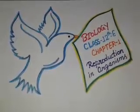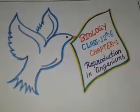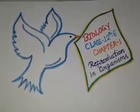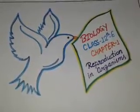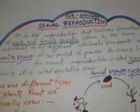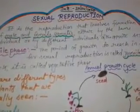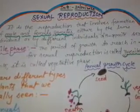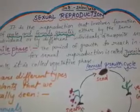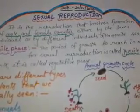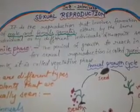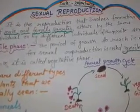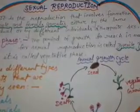Today, I will teach class 12 biology chapter number 1, that is reproduction in organisms, where we will discuss about sexual reproduction. We studied in the previous class about sexual reproduction very briefly, but today I will discuss it again. It is the reproduction that involves formation of male and female gametes, either by the same individual or by different individuals of the opposite sex.